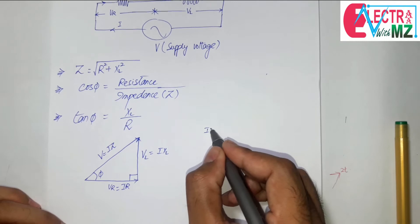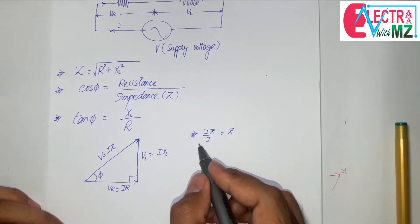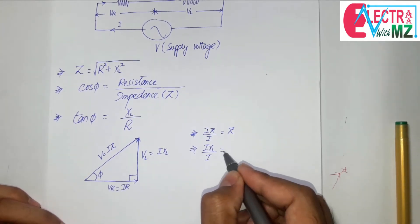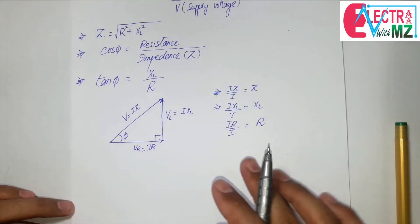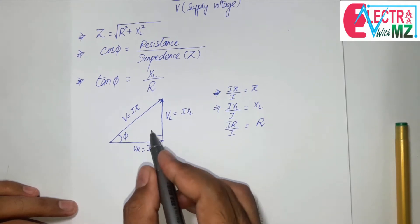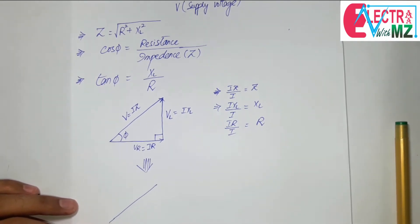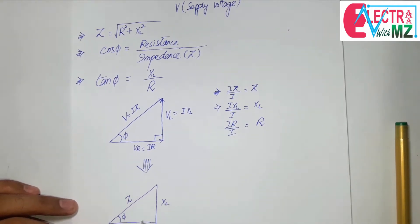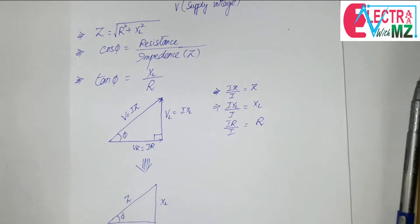When we divide each side by I, we get: IZ divided by I equals Z, IXL divided by I equals XL, and IR divided by I equals R. So the resulting triangle has Z as the hypotenuse, XL as the perpendicular side, R as the base, and phi as the phase angle. This is the impedance triangle.